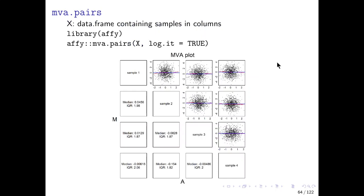Here you can see an example of this mva.pairs plot. And as you can see here for three samples, it works. But if you have many more, then you cannot see anything anymore.